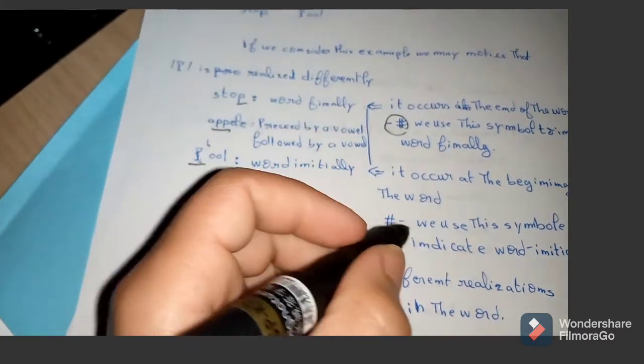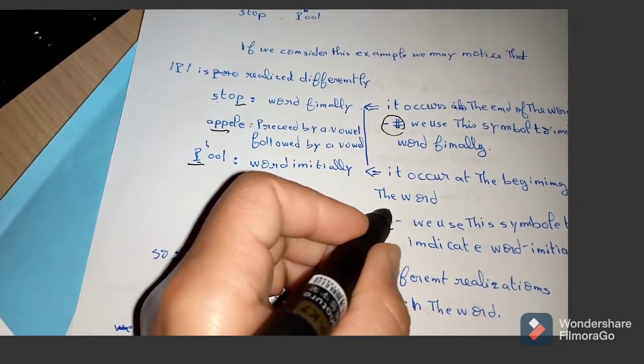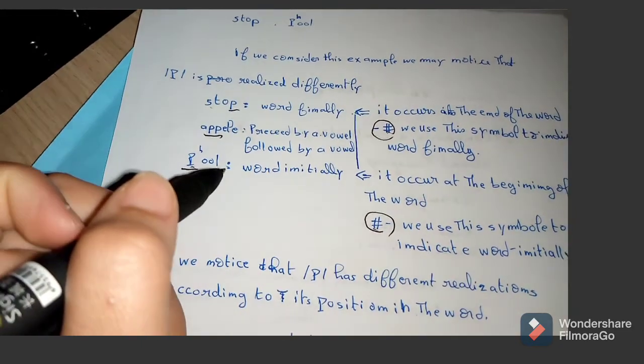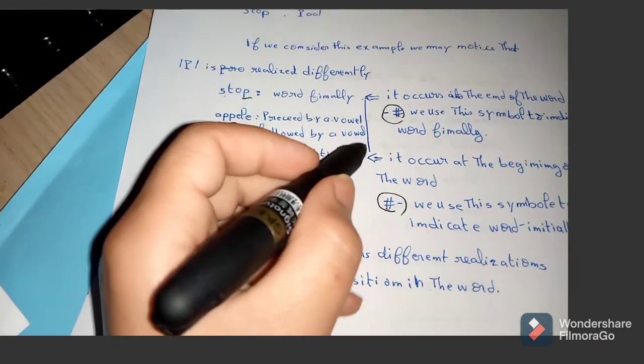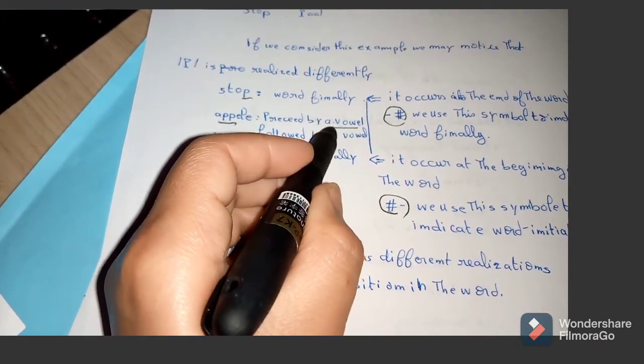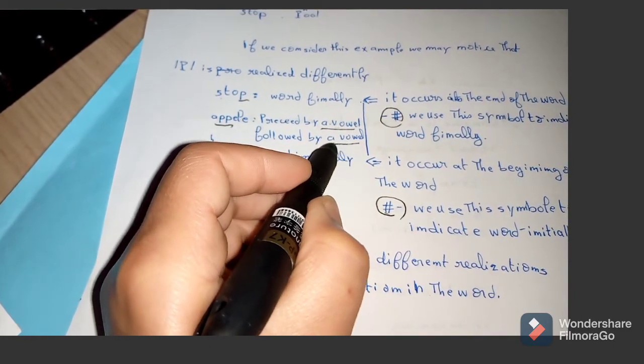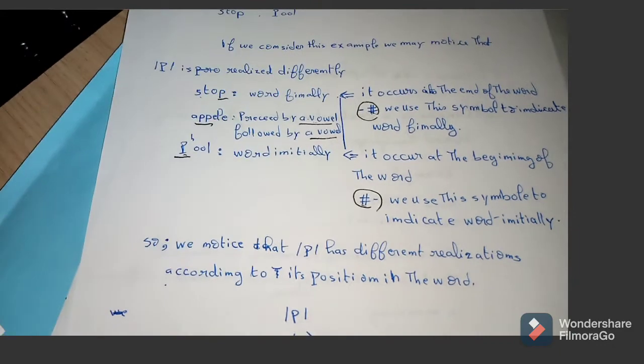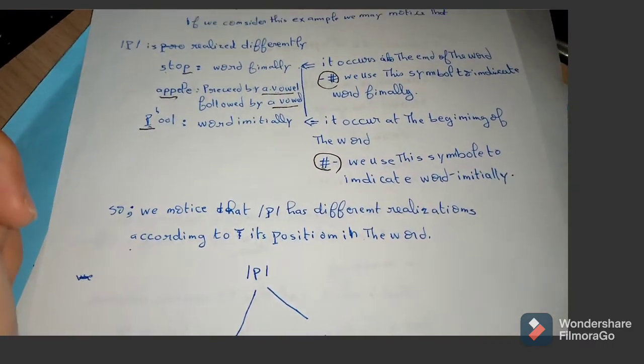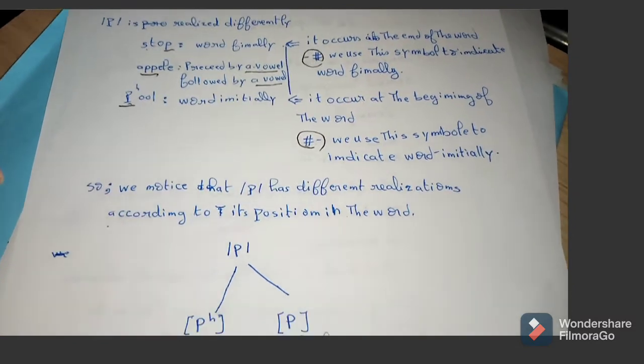So as we have noticed, the P has different realizations according to its positions in the words. We can express this idea by using a chart. The phoneme /p/ becomes, or is realized as, the aspirated P when it occurs word-initially.